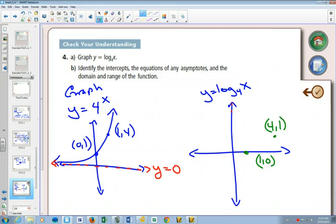All log graphs are going to have an asymptote at x equals 0. And then it's going to swoop like that. Unless the base was less than 1, then it's going to swoop down the other way.